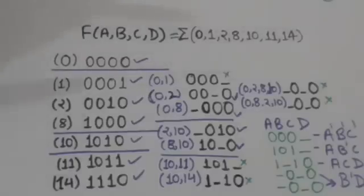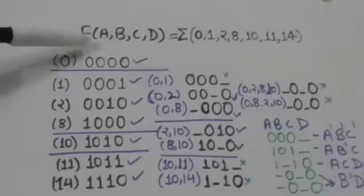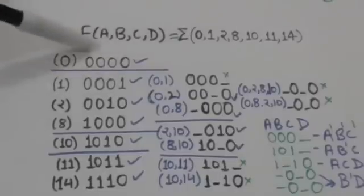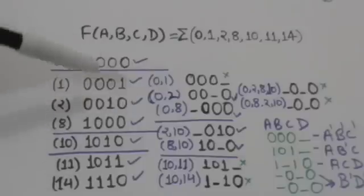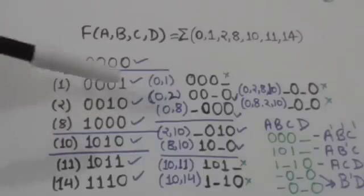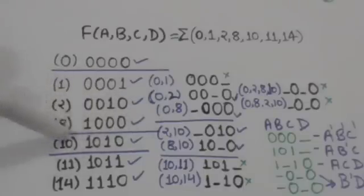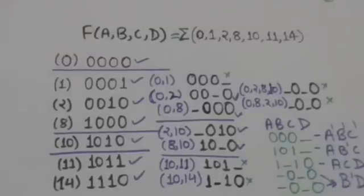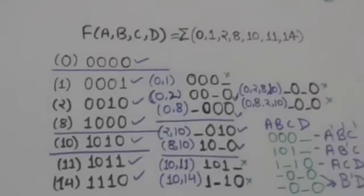First of all we will find the binary representation of these minterms. Here I have found the binary representations of all these minterms: this is the representation of m0, m1, m2, m8, m10, m11, and m14. Now we have to divide these binary representations of minterms into different groups depending on the number of ones they contain.